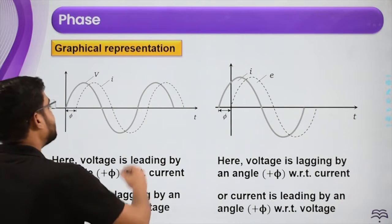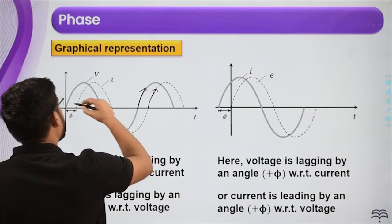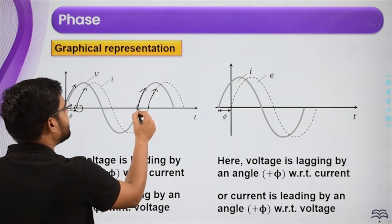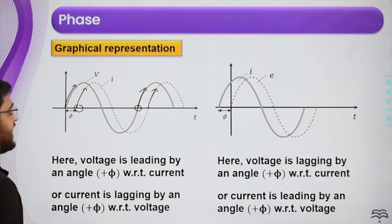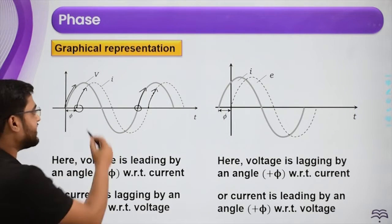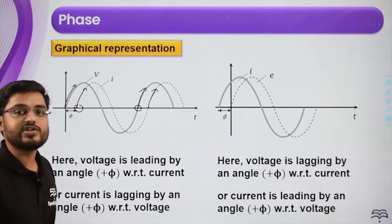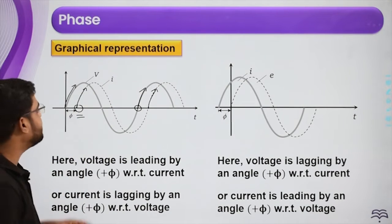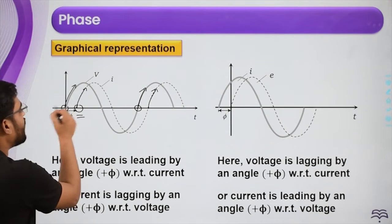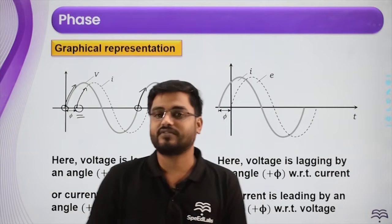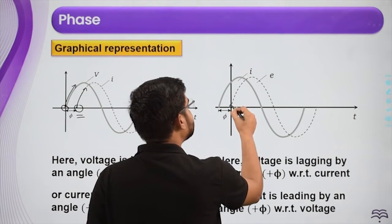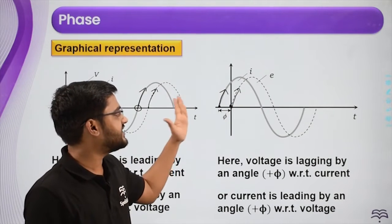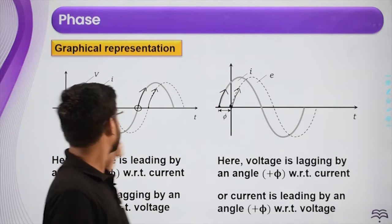You might ask: these are also starting points — what if I take this as the starting point of current and this as the starting point for voltage, and current appears to be leading? Always remember: take the nearby position of the other. If you choose a starting point for current, then choose the nearest starting point of voltage relative to it. Always choose a nearby position of the other with respect to the first one, and then decide which starts first — that one is leading.